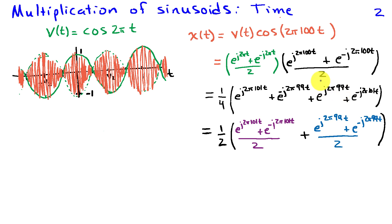Finally, the last term is to take e to the j minus 2 pi t times e to the minus j 2 pi 100 t. Adding the exponents again, we get e to the minus j 2 pi 101 t.